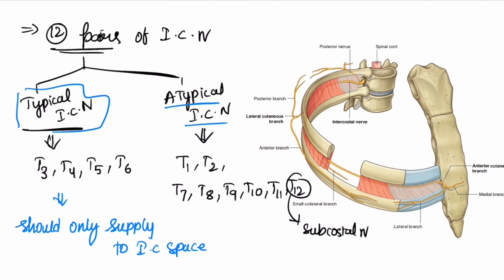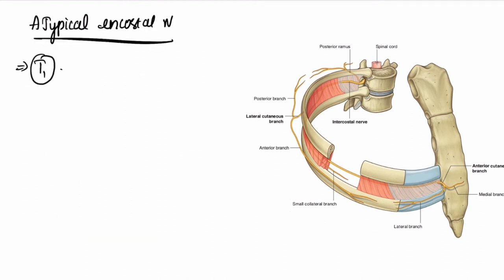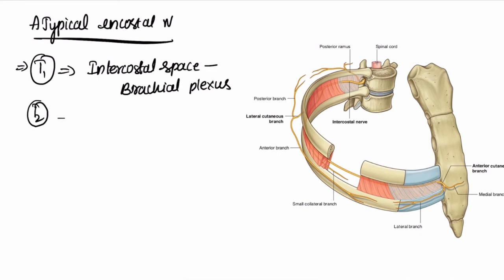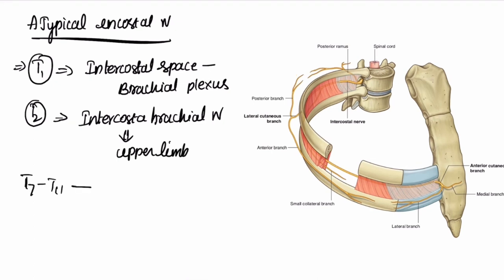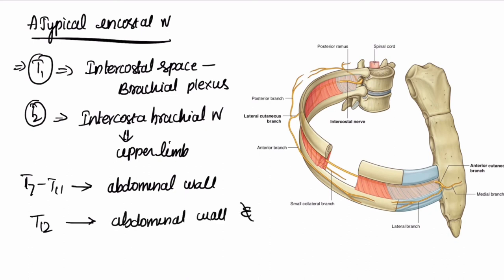Now let us discuss about the atypical intercostal nerves. T1 intercostal nerve supplies to the intercostal space and also contributes to the brachial plexus. T2 intercostal nerve is also called the intercostobrachial nerve as it also supplies to the upper limb. T7 to T11 intercostal nerves also supply to the abdominal wall and also the skin on the buttocks.